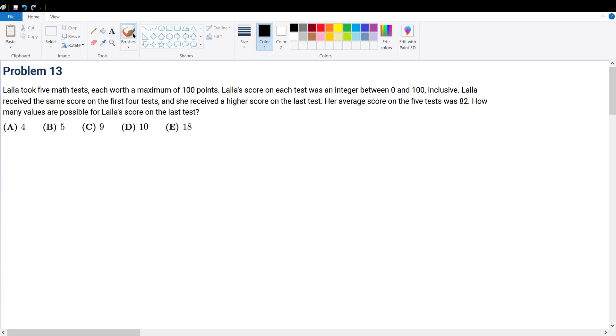Problem 13. Layla took 5 math tests each worth a maximum of 100 points. Layla's score on each test was integer between 0 to 100 inclusive. Layla received the same score in the first four tests and she received the highest score in the last test. Her average score on 5 tests was 82. How many values are possible for Layla's score on the last test?